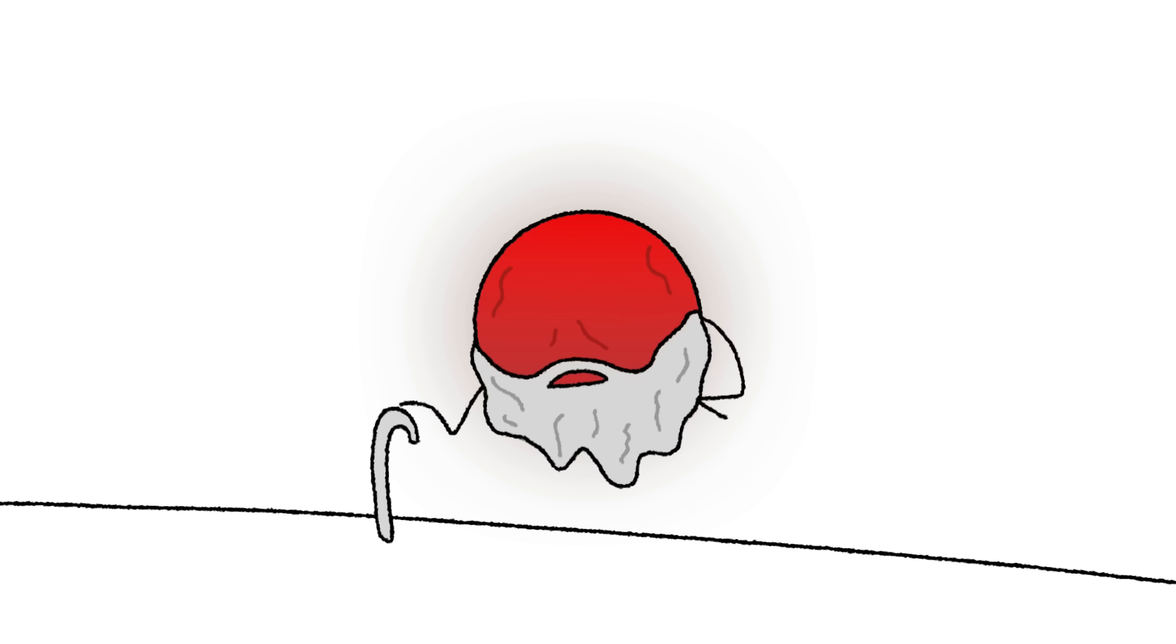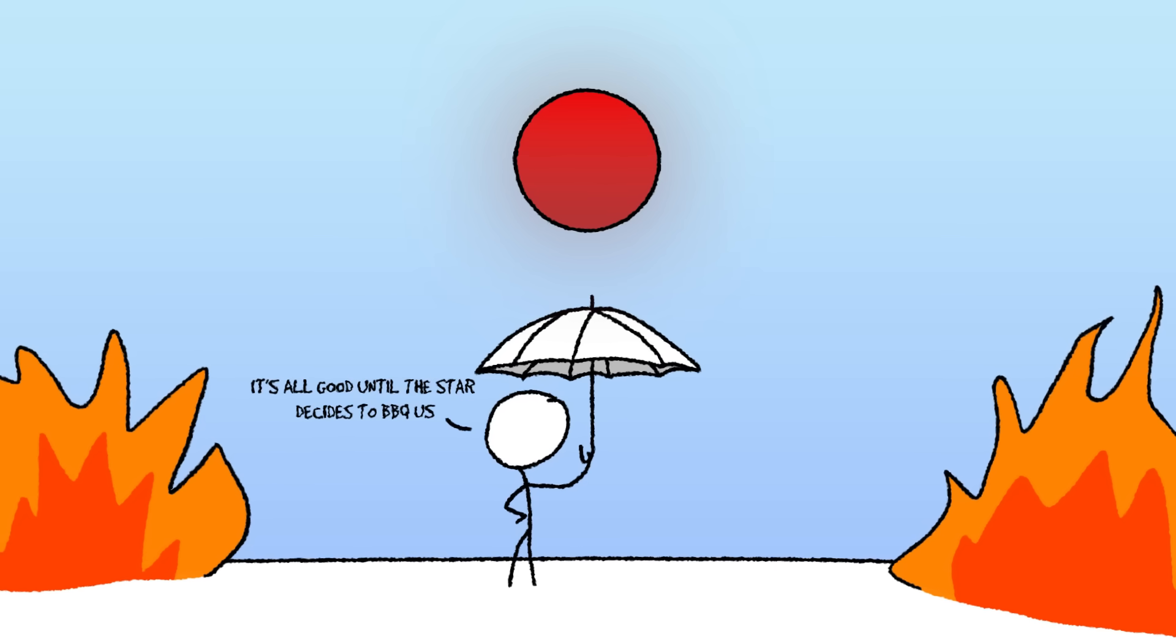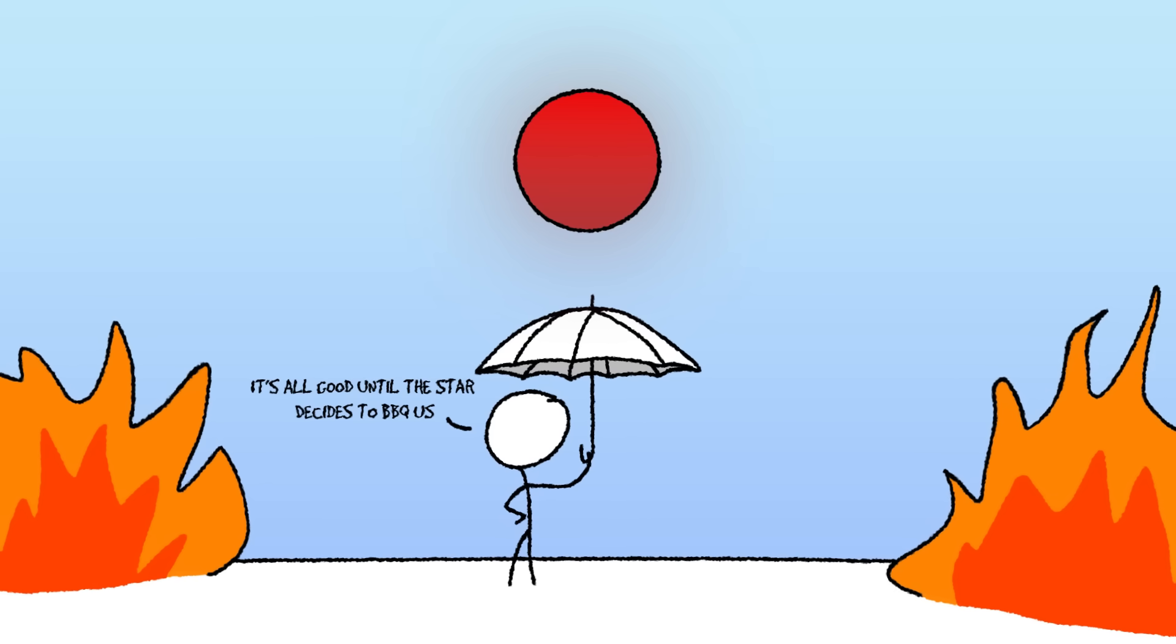That said, Proxima Centauri does have one advantage. It's ridiculously long-lived. While our sun will last about 10 billion years, Proxima Centauri will burn for 4 trillion years. So if your biggest concern is outliving the universe, this is your star. You'll just have to live in perpetual twilight while the sky occasionally tries to fry you alive.